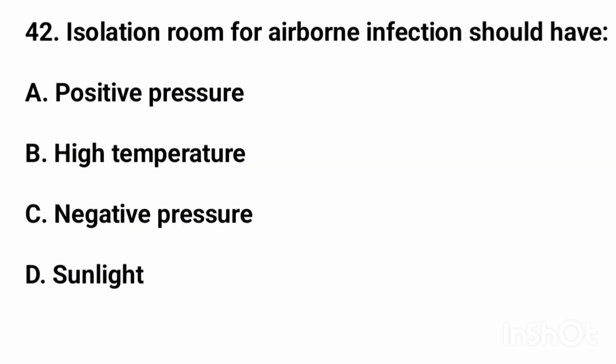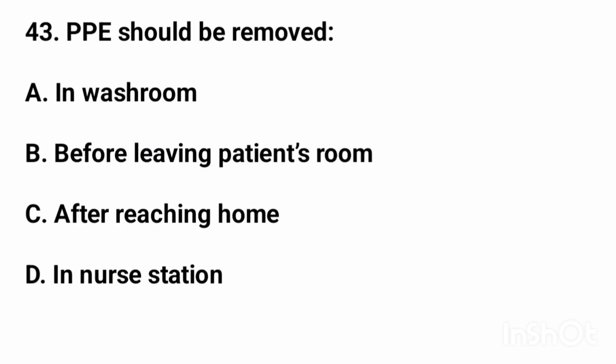Question number 42: Isolation room for airborne infection should have? The right answer is option C: negative pressure. Question number 43: PPE should be removed? The right answer is option B: before leaving patient's room.